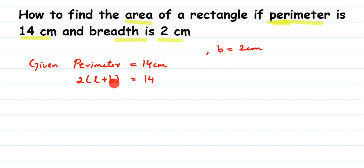There are two ways of doing it — you can open the bracket so it becomes 2L plus 2B and proceed further, or you can substitute directly inside the bracket. So it becomes 2 into (L plus 2) is equal to 14. Now I want the value of L.